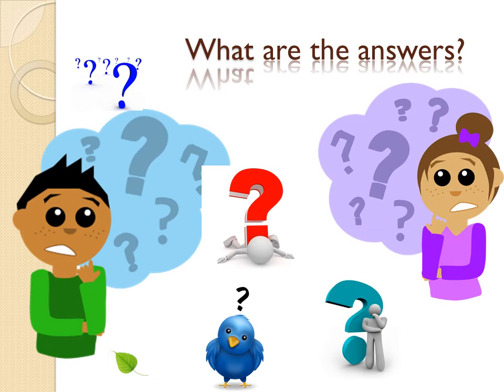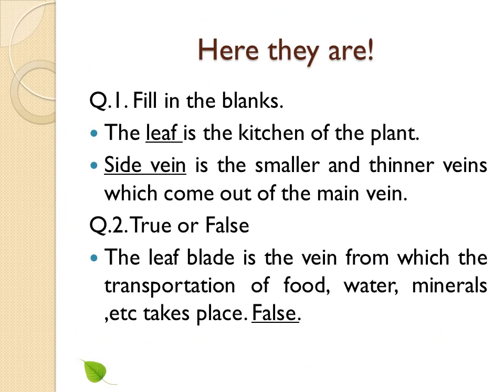What are the answers? Here they are. Question number one — fill in the blanks. The leaf is the kitchen of the plant. Side vein is the smaller and thinner vein which comes out of the main vein.